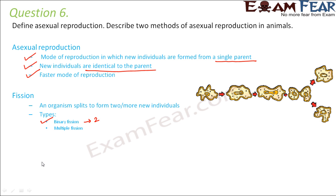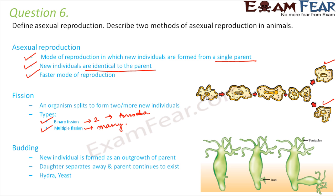If it splits to form two individuals, that is called binary fission. If it splits to form many individuals, that is called multiple fission. Binary fission is very commonly seen in amoeba. First, the nucleus divides into two, and then the cytoplasm also divides, giving us two daughter cells exactly identical to the parent.